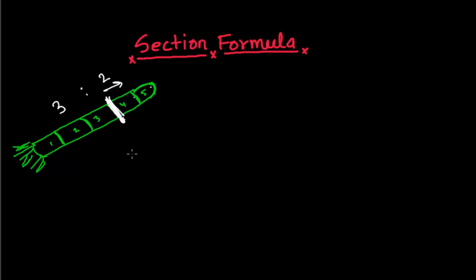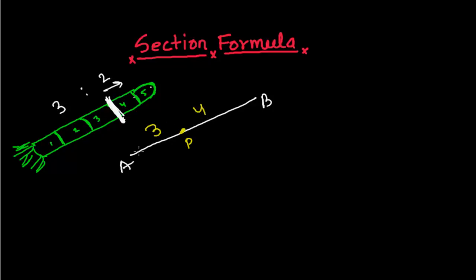Let me take another example. This is line AB, and here is another point P. This P point is dividing the line in 3 parts on one side and 4 equal parts on the other side. So we say P is dividing or sectioning AB internally in the ratio of 3:4. This is called internal section.